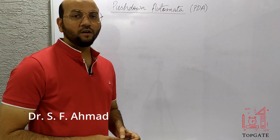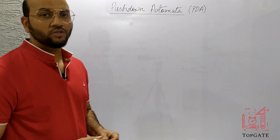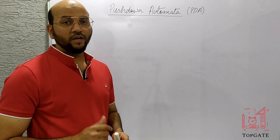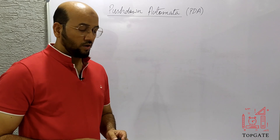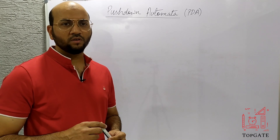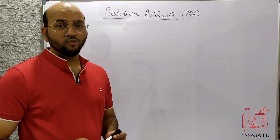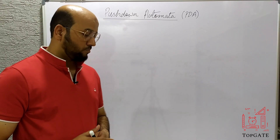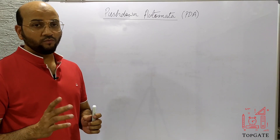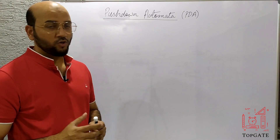Hello students, welcome to the channel TopGate. Today we will discuss one of the most important questions of the PDA — that is, design a PDA for the language L = a^n b^n. This question is often asked in GATE exams as well as university exams. Remember, for this particular language the finite automata failed, so there was no finite automata available for L = a^n b^n.